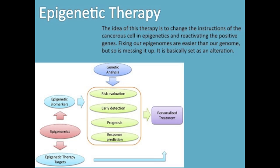The epigenetic theory has led scientists to design a therapy. The idea is to change the instructions of the problem cells in the epigenomes and reactivate the positive gene. They alter the targeted epigenome to act like the gene it is supposed to by creating a personalized treatment. This therapy has seen great success, sending about 50% of trial patients into remission. The outcomes have many factors — for example, this treatment may not work if the patient was too far along in their cancer or other illness to reverse it. The chart on the screen shows the steps scientists use to decide whether a person is right for this therapy.